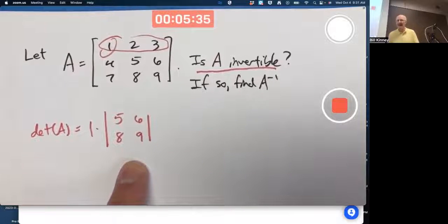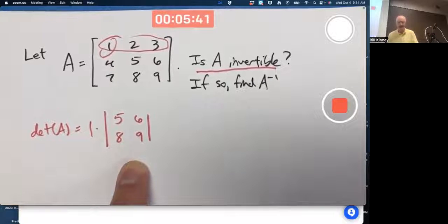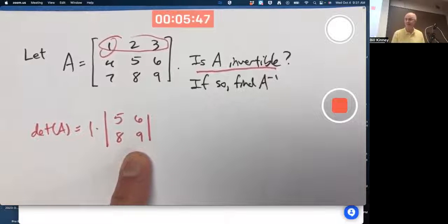I circled that first row. So I take the first number in that first row, which does happen to be a one, and write it down. And I multiply that by the determinant of a two-by-two matrix obtained by imagining canceling out that row and canceling out that column that the one is in.